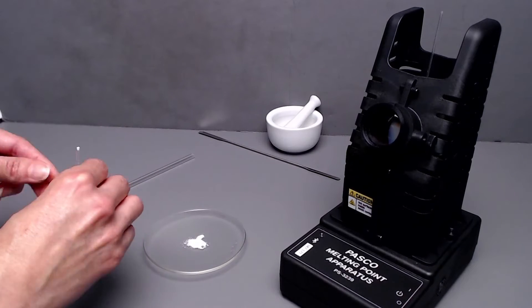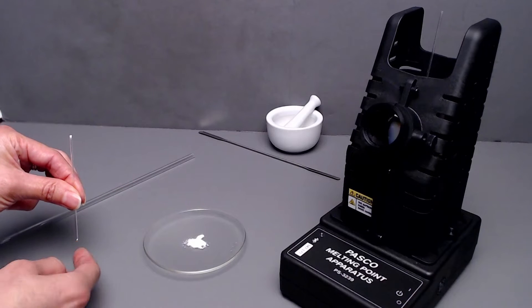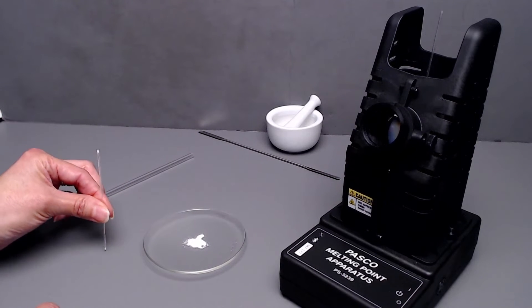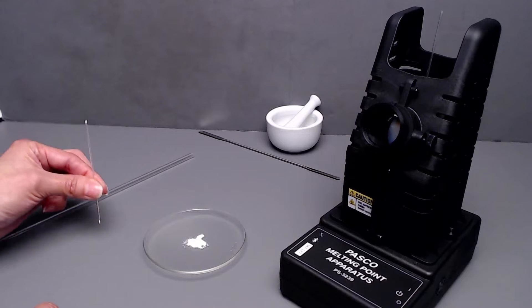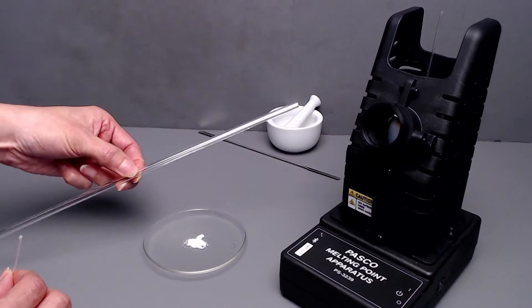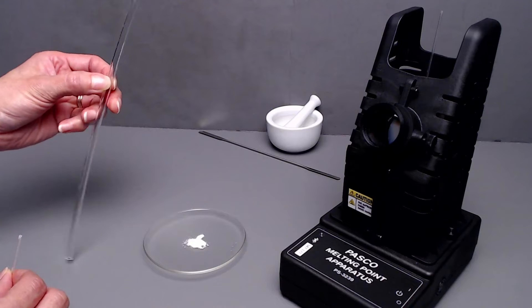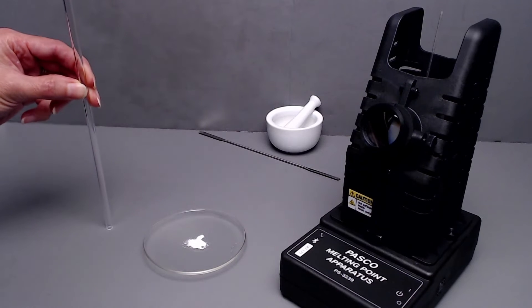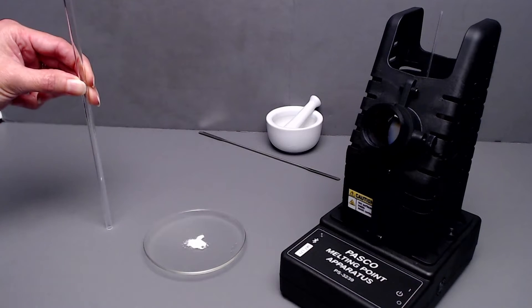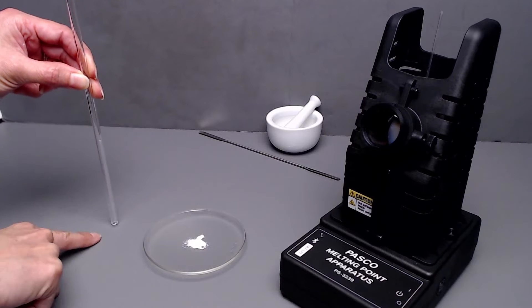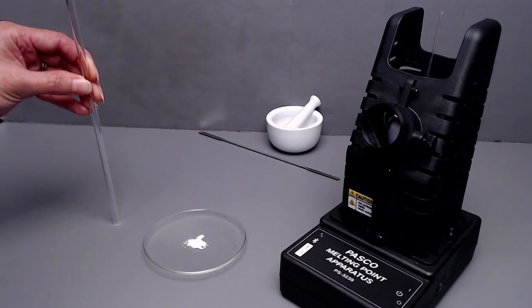Then invert the tube so that the closed end or the bulb is on the bottom and either tap the sample gently a few times on your surface, or if you have an open hollow tube, you can always drop the capillary tube in there with the bulb down and pack the sample that way.